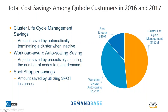Here are some results we collected over the last couple of years. The Spot Shopper piece has saved our customers $40 million in usage costs. Cluster lifecycle management — dynamically launching and tearing down idle clusters — has saved our customers $150 million in usage costs. And workload-aware scaling — dynamically adding and removing nodes when a cluster is up — has saved our customers $121 million.